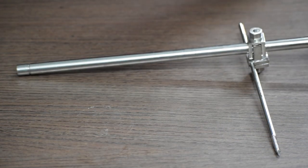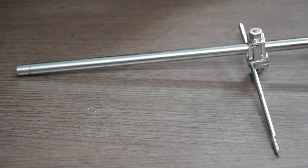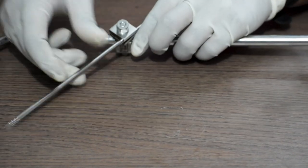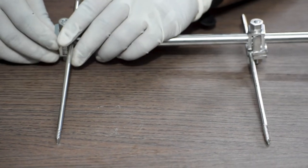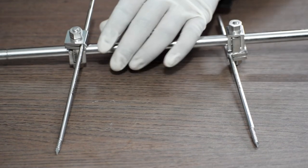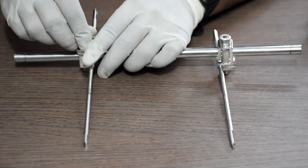Similarly, we can fix another Schanz pin with the help of a single pin clamp. We will do the exact same process like the first one. This was for the single rod fixation.